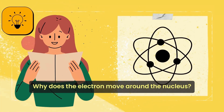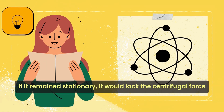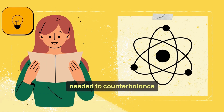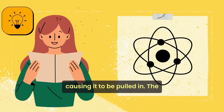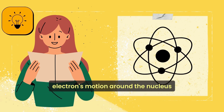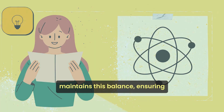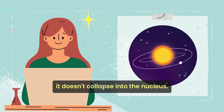Why does the electron move around the nucleus? If it remained stationary, it would lack the centrifugal force needed to counterbalance the electrostatic attraction from the nucleus, causing it to be pulled in. The electron's motion around the nucleus maintains this balance, ensuring it doesn't collapse into the nucleus.